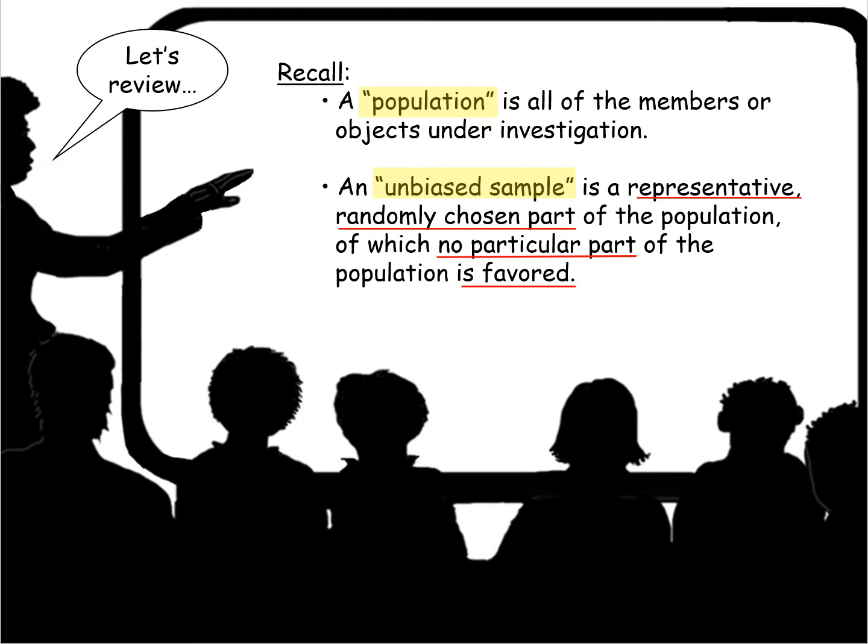An unbiased sample is a representative, randomly chosen part of the population of which no particular part of the population is favored. It's really important that we remember that an unbiased sample is a randomly chosen part of the population and that no particular part is favored.